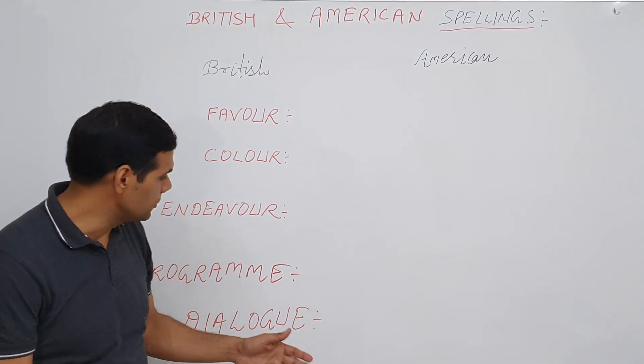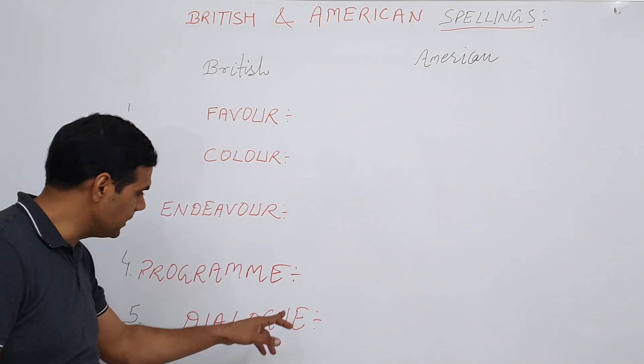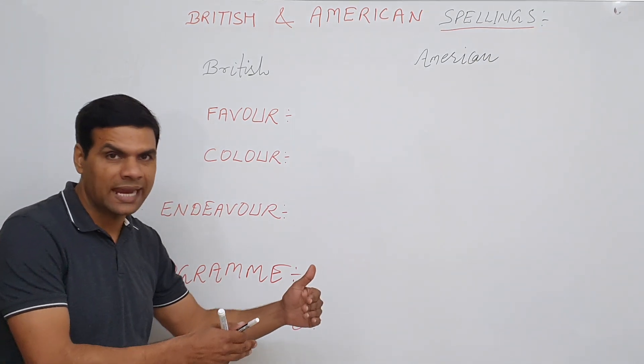These spellings are sometimes a little tricky because there are certain letters which are never spoken. For example, 'U' here, and 'M-E', and 'G-U-E', and 'U-E' here. These are the letters which are just added to the spellings but never spoken.